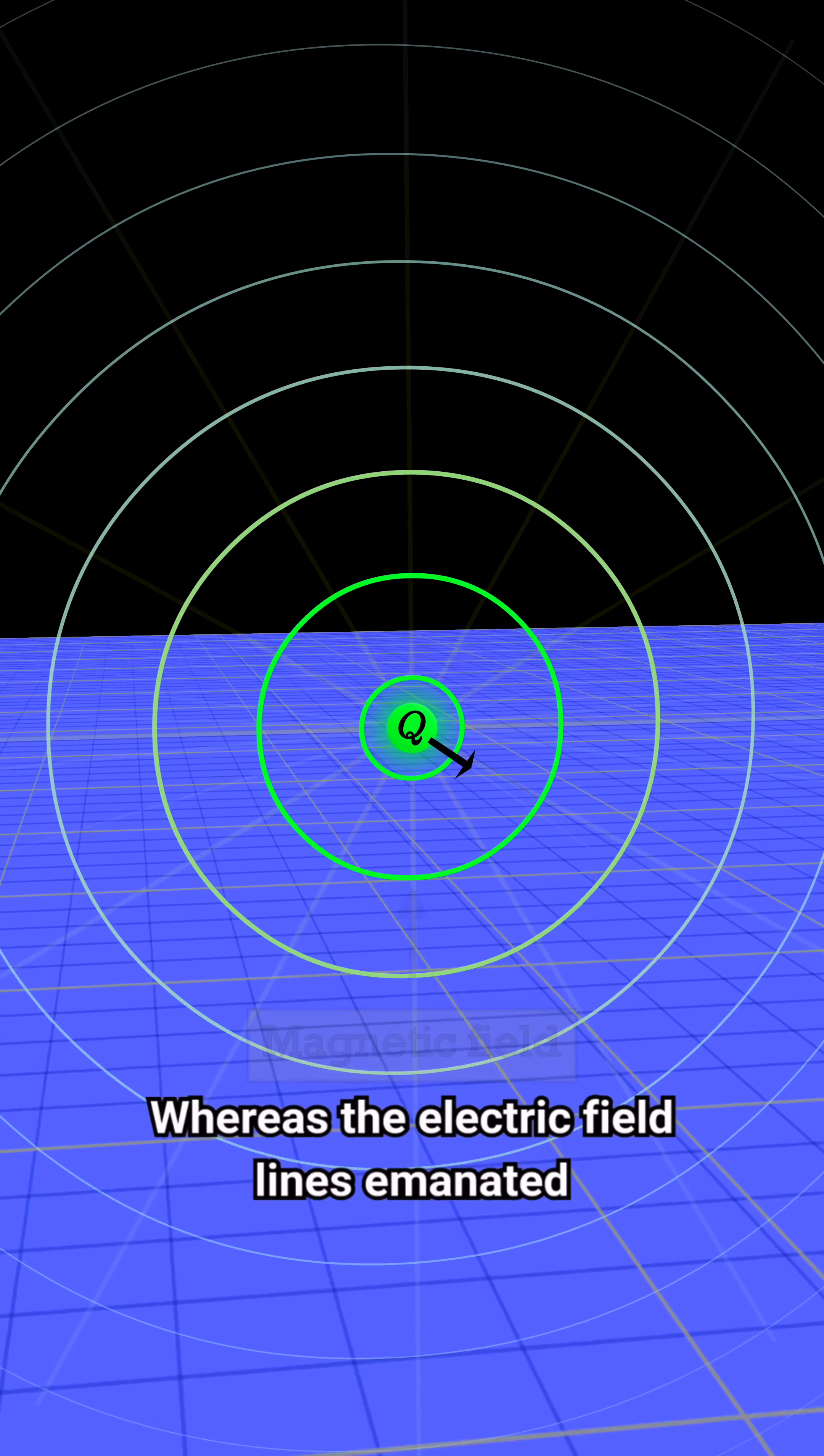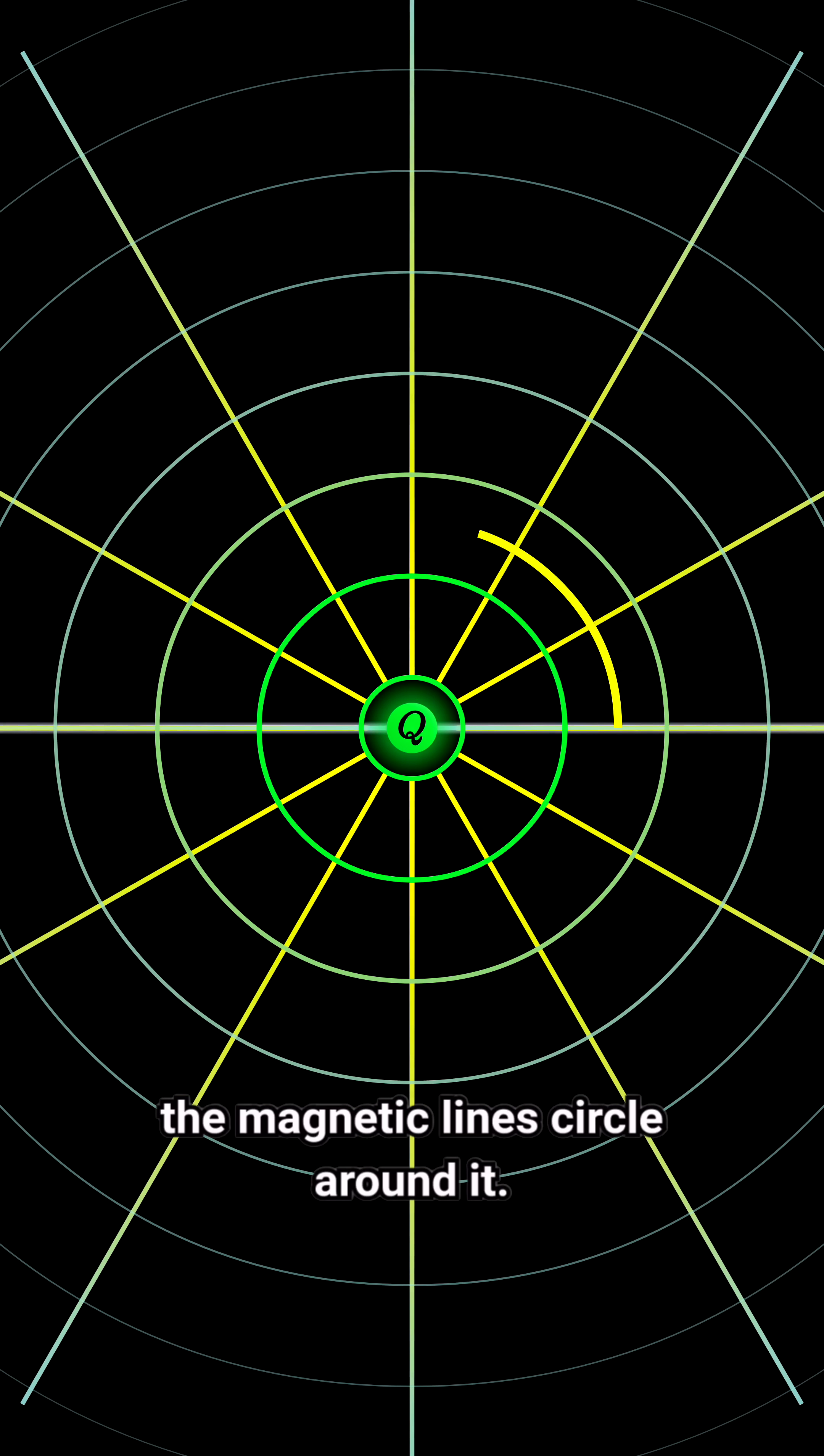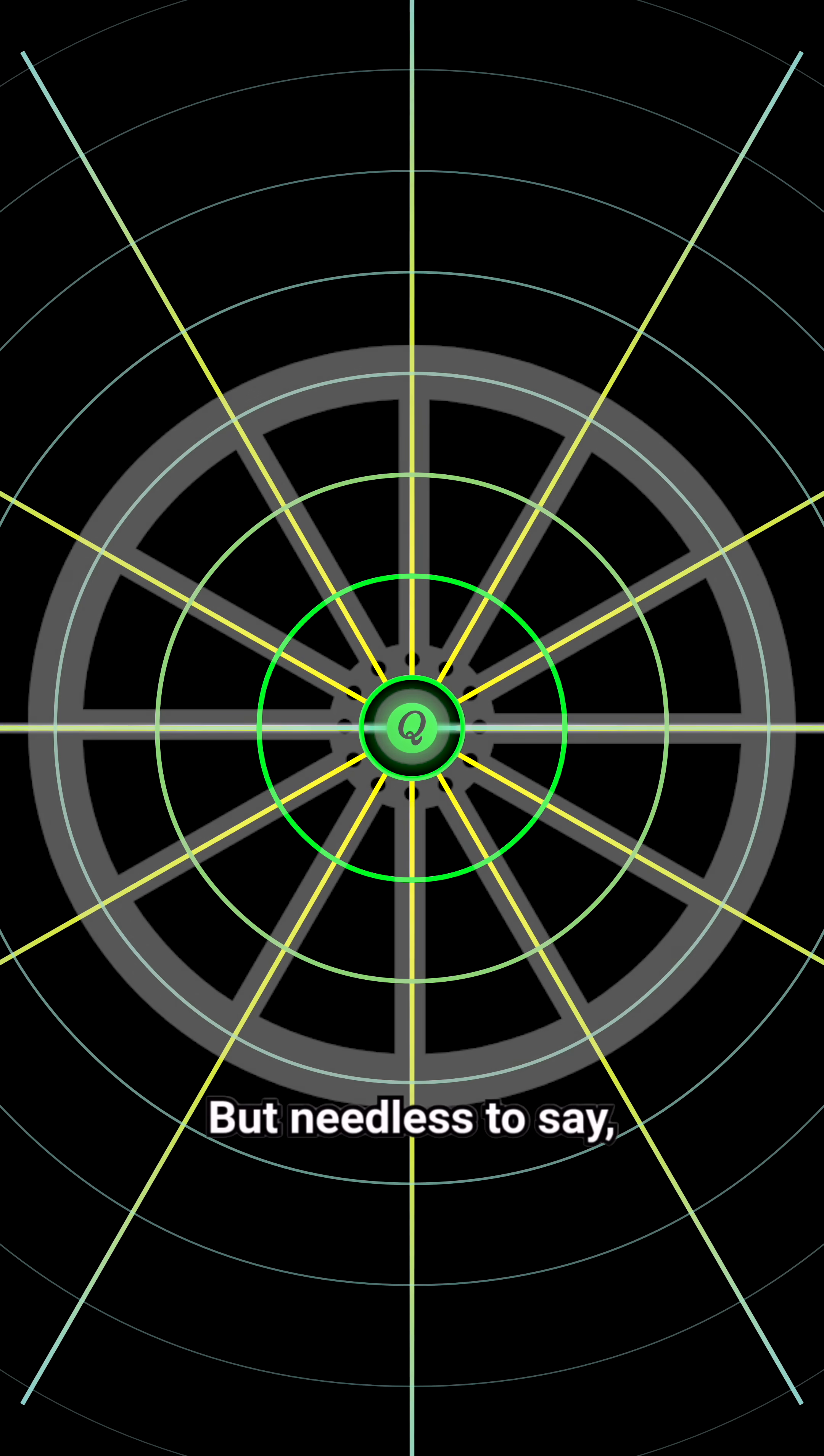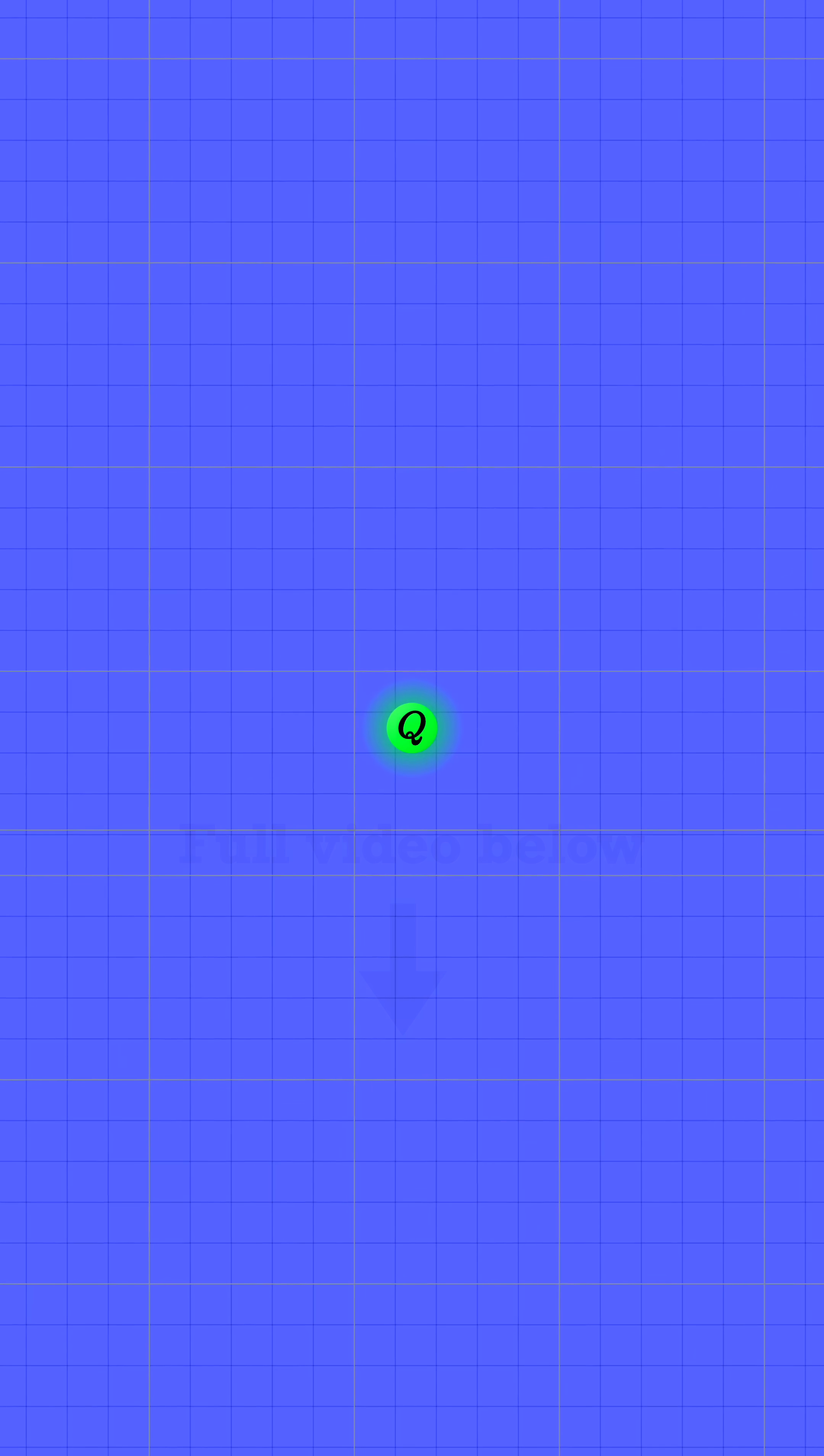Whereas the electric field lines emanated radially away from the charge, the magnetic lines circle around it. And taken together, the two fields look something like a wheel and its spokes. But needless to say, the fields of a moving charge are quite a bit more complicated.